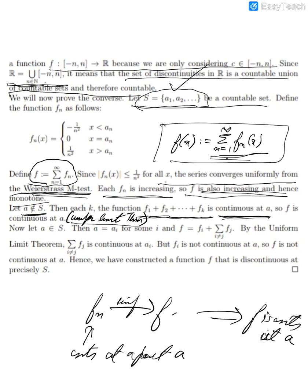For the other direction, if you have some a in this set S, then a = a_i for some i. You can write f as f_i + Σf_j where i ≠ j. Again by the uniform limit theorem, this sum Σf_j (i ≠ j) is continuous at a. But f_i is not continuous at a. From the construction, f_i is discontinuous at precisely a_i. Hence we have constructed a function discontinuous at precisely S, because f_i is discontinuous, the sum is continuous, hence their sum will be discontinuous at this point. Otherwise the difference would also be continuous, but f_i is discontinuous, which would be a contradiction.